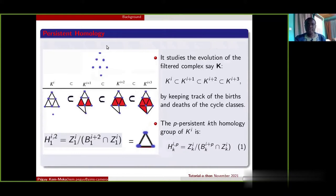For example, the idea of persistent homology on this data is to study the evolution of the associated filtered complex K here from I to I plus 3 by keeping track of the birth and death of cycle classes. So the P-persistent K homology of the complex KI is given by this formula. For example, the persistent first homology between I and I plus 2 is this cycle up.